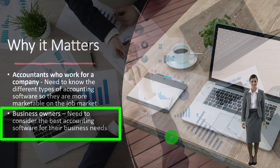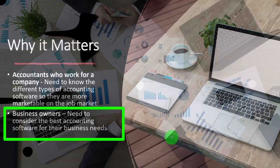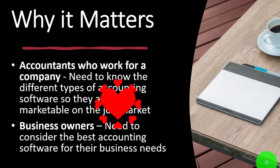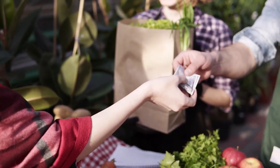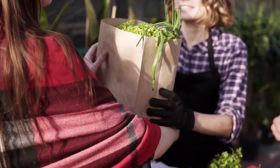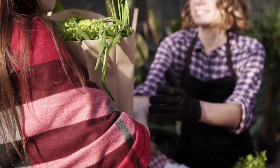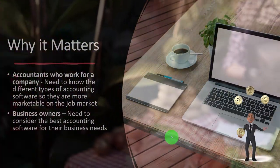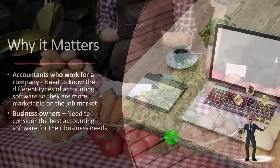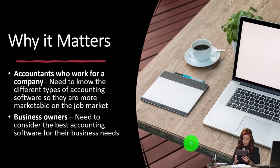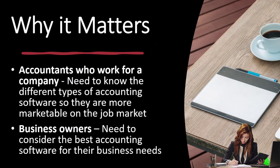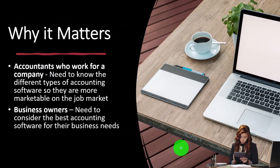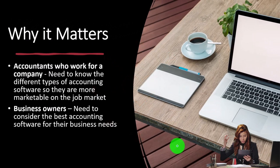For business owners looking for software for their own business, you want to be very particular about the kind of software you put in place - making sure it has what you need. To do that, you need to know what industry you're in, what special needs that industry may have, how large the company is, and whether you want to work mainly from an office or have a more diverse situation where you can access the software from multiple different points.